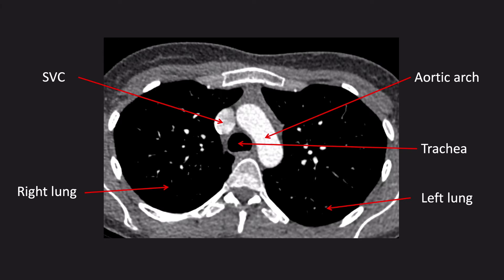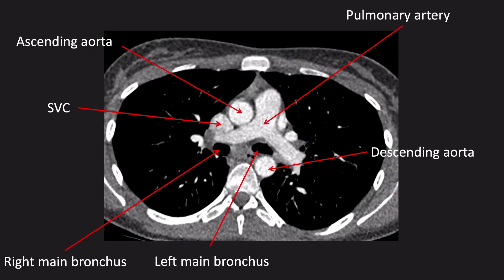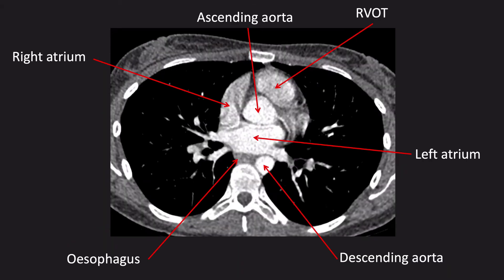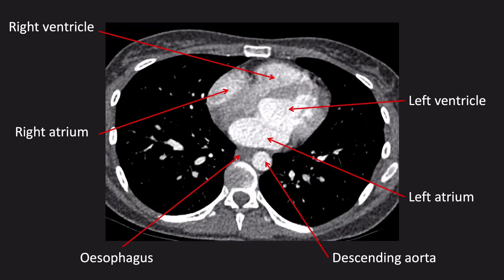Now I'm going to run through some cross-sectional anatomy. Starting in the superior mediastinum, we have the aortic arch and on the right, the superior vena cava with the trachea posteriorly. Moving down below the level of the aortic arch, we can see the ascending aorta anteriorly and descending aorta posteriorly. In between the two is the main pulmonary artery branching into right and left pulmonary arteries. The trachea splits into the right and left main bronchi at the carina. Coming into the heart, we can see the aortic root just above the level of the aortic valve and the right ventricular outflow tract running into the pulmonary artery. The left atrium is the most posterior cardiac chamber, linking to the left ventricle via the mitral valve. The right ventricle is the most anterior chamber and is linked to the right atrium by the tricuspid valve.